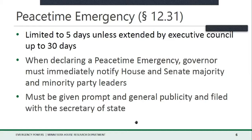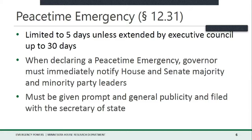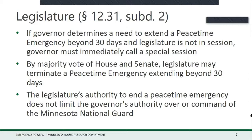The Executive Council is comprised of the state's constitutional officers: the governor, lieutenant governor, attorney general, secretary of state, and state auditor. When declaring a peacetime emergency, the law requires the governor to immediately notify House and Senate majority and minority party leaders and to give the declaration prompt and general publicity and file it with the secretary of state. Chapter 12 also prescribes a role for the Legislature: if the governor needs to extend a peacetime emergency beyond 30 days and the Legislature is not already in session, the governor must immediately call a special session. By a majority vote of both the House and the Senate, the Legislature may terminate a peacetime emergency that extends beyond 30 days.